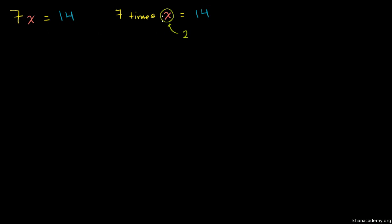This literally just says 7 times x is equal to 14. In algebra, we don't write the times there. When you write two numbers next to each other, or a number next to a variable like this, it just means that you are multiplying. It's just a shorthand notation. And in general, we don't use the multiplication sign because it's confusing.